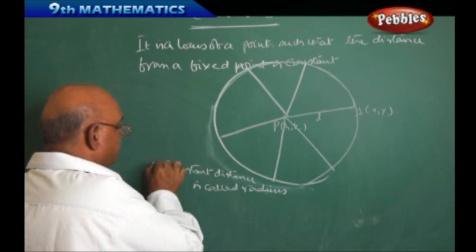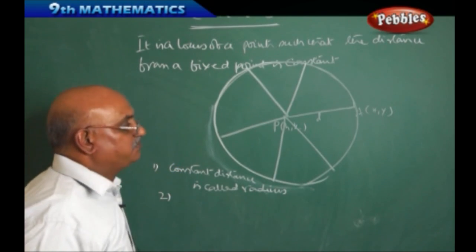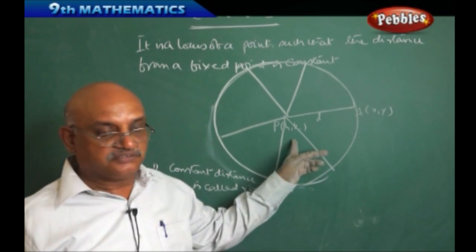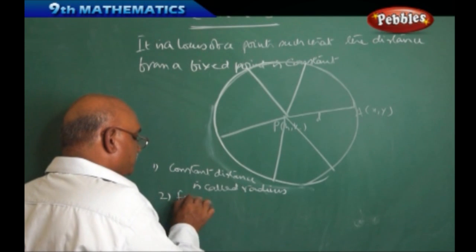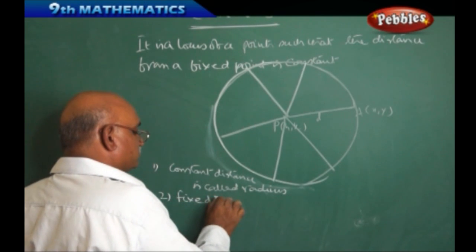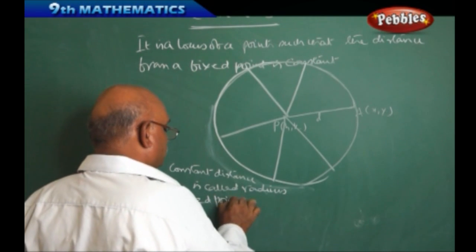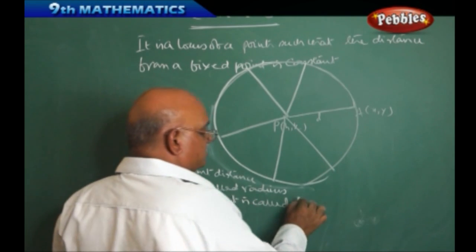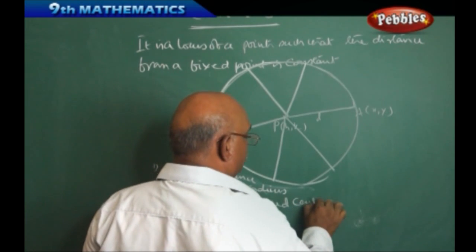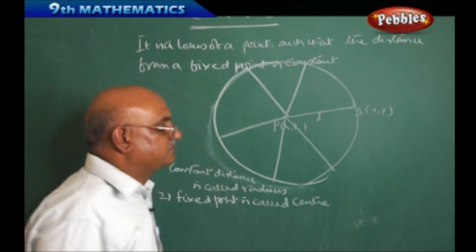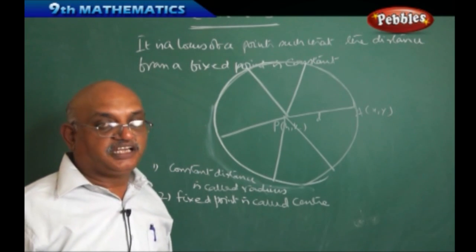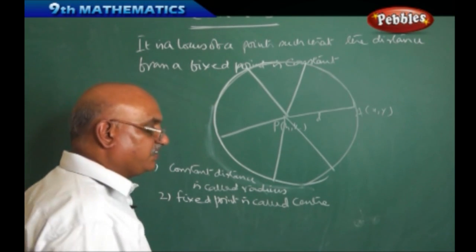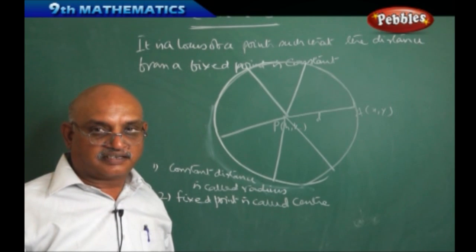From this, there are certain points we have to observe. The constant distance is called the radius. The fixed point is called the center of the circle. That implies we are able to come to one conclusion: a circle will have a center as well as a radius.